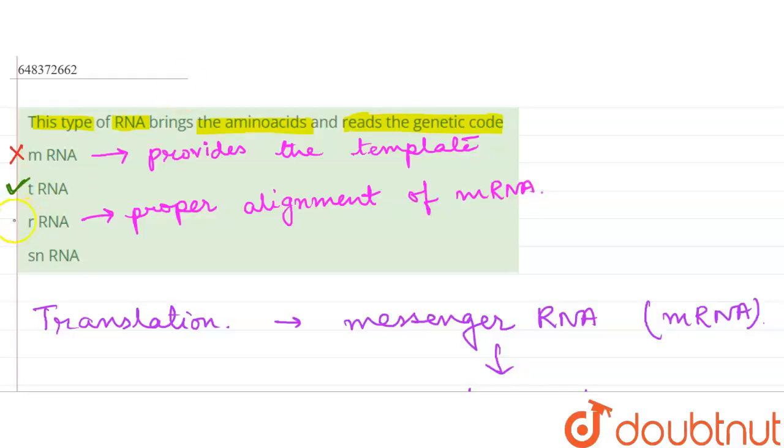This is also incorrect. And the last option is the small nuclear RNA, that is snRNA. Basically it helps in the processing of pre-messenger RNA.